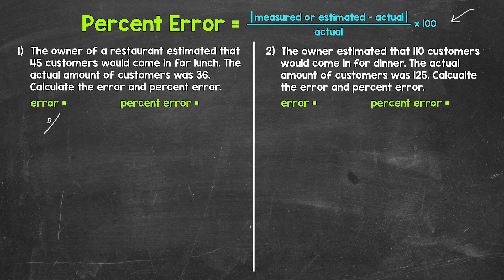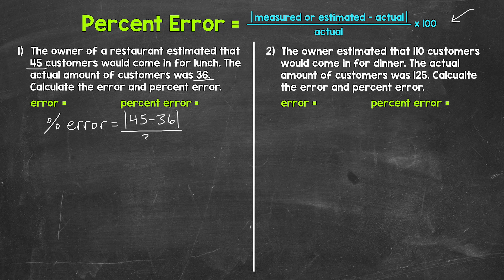Let's set this up for number one. We have percent error equals the absolute value of the estimated value — that's 45 — minus the actual value — that's 36 — divided by the actual value, which is again 36, times 100.